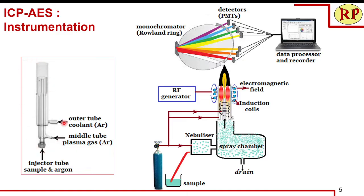The plasma torch is mainly made of quartz glass or ceramic. It has three concentric tubes. Through the center tube — also called the injector tube — the sample and argon gas are injected. Through the middle tube, argon gas is supplied to create the plasma flame. The outer tube supplies argon gas that acts as a coolant, protecting the quartz tube from the very high temperature at the center.